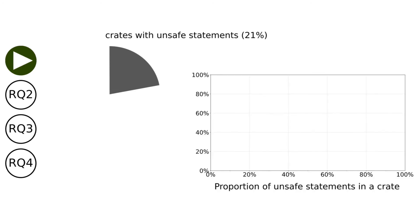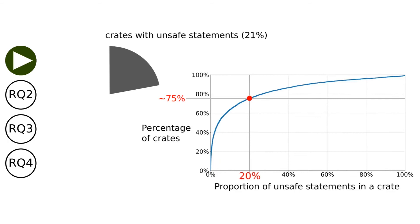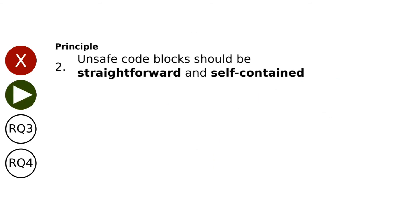Let's narrow our view to the 21% of crates that contain unsafe statements. On the x-axis we have the proportion of unsafe statements; on the y-axis, a cumulative percentage of crates. We can see that around a quarter of crates has a proportion of unsafe statements of at least 20%. With these numbers, we cannot claim that developers use unsafe code sparingly.